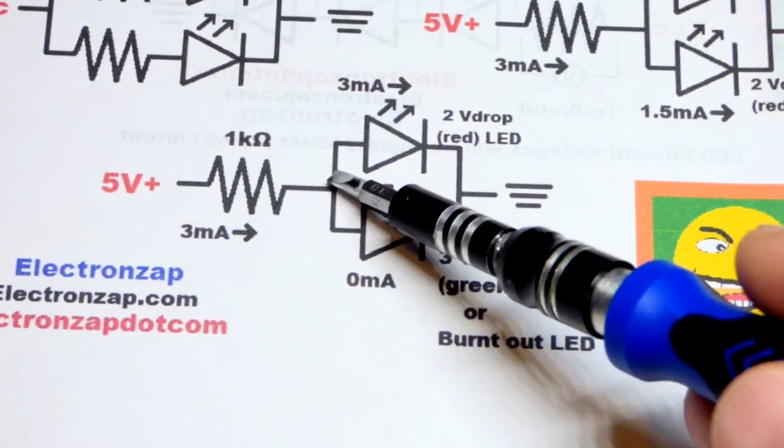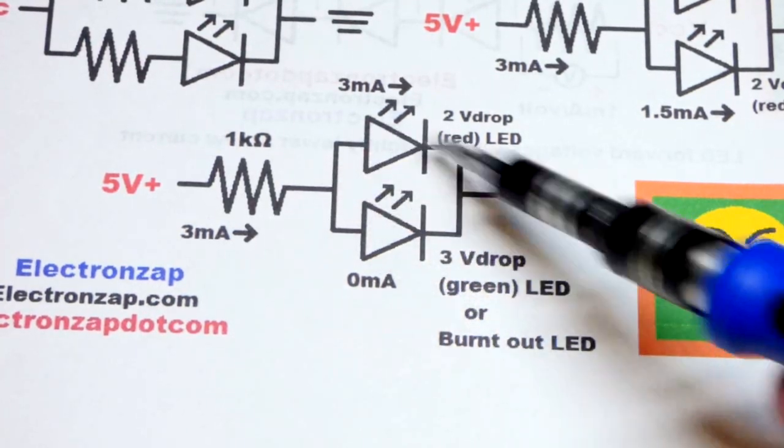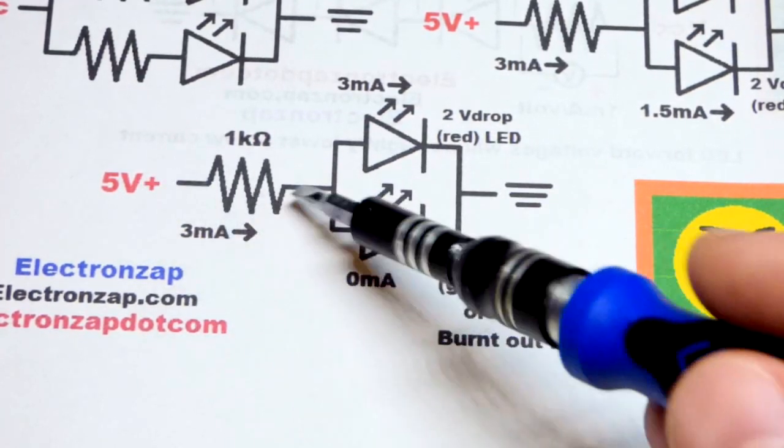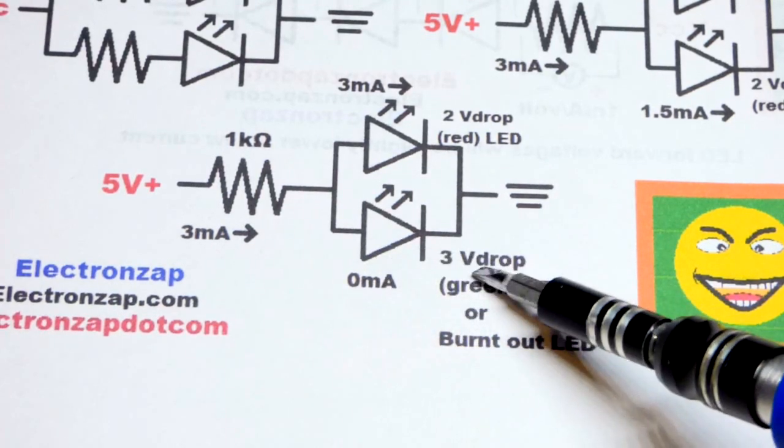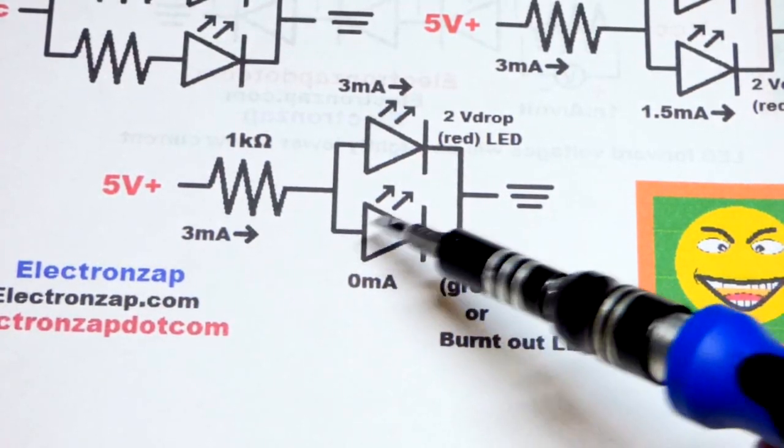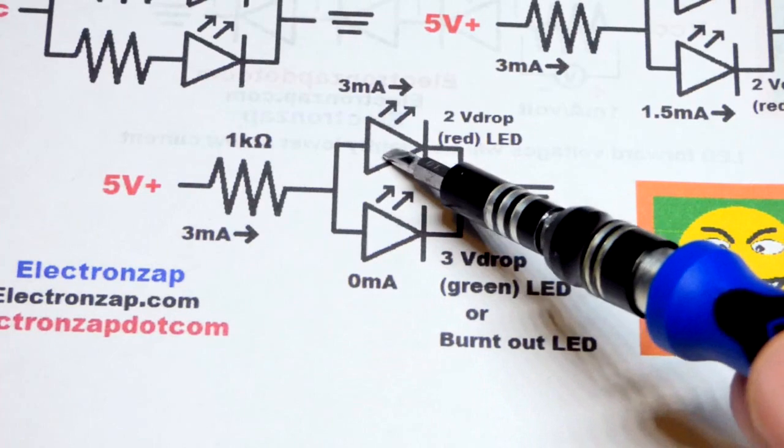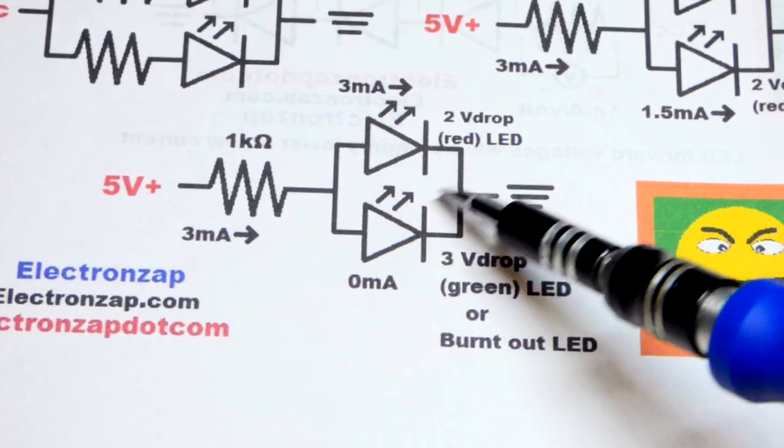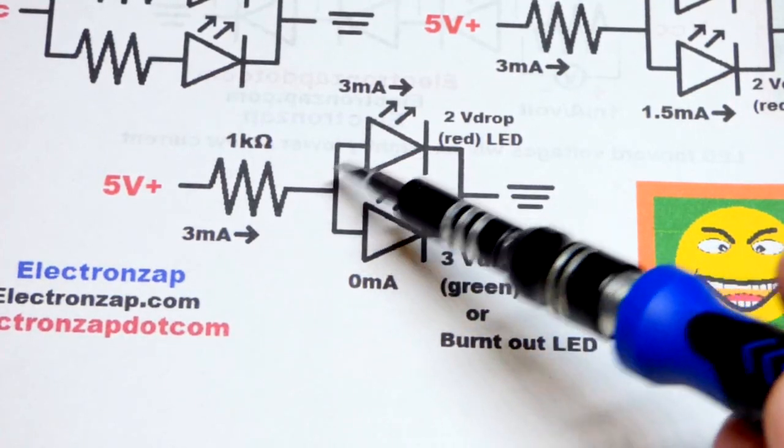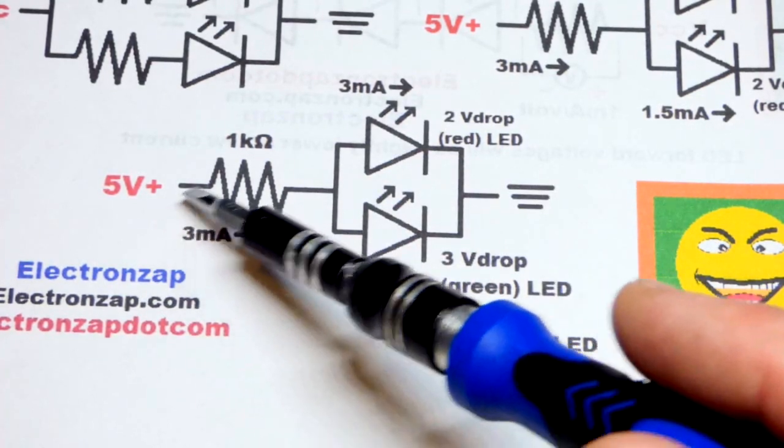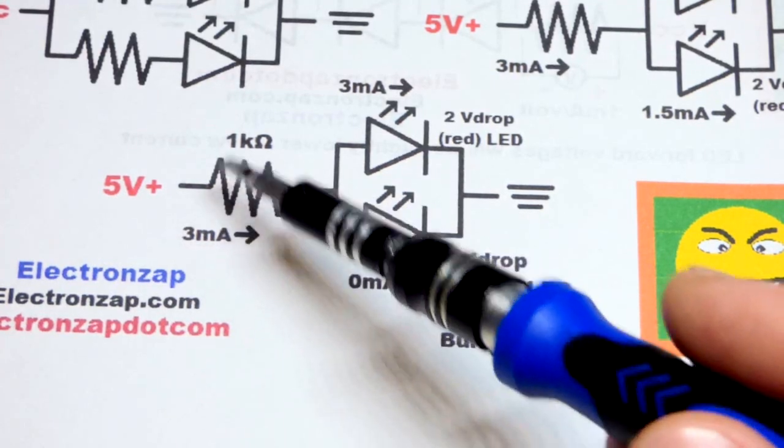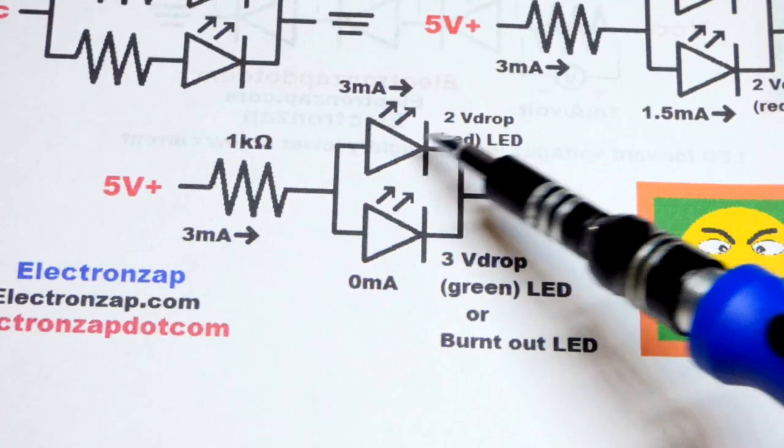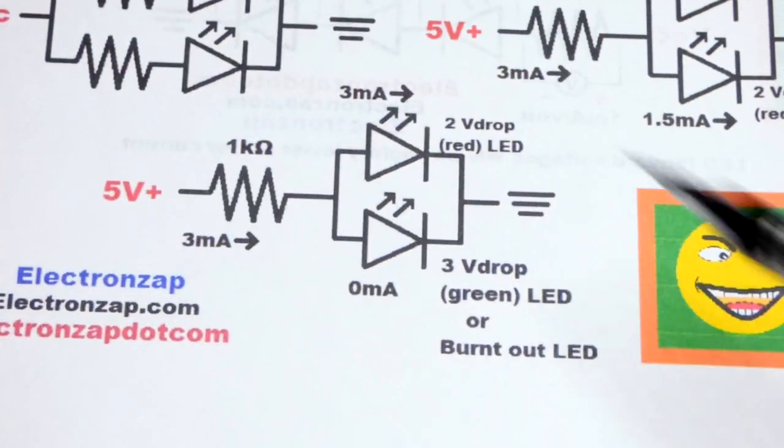Once the yellow or orange, whatever color it is, starts conducting, it's going to hold that voltage down to about 2 volts, even if current went up or whatever. And so we'll never get to that 3 volts across the green LED. It's not going to light up. I'll remove the yellow LED though, and we'll see that the green one finally does light up once we remove that one. But as long as they're parallel, it will not light up. And so the 3 milliamps of current will go through that 1 kilo ohm resistor because it's 5 volts, with a 2 volt drop LED. The 3 milliamp current is going to go through the yellow LED.